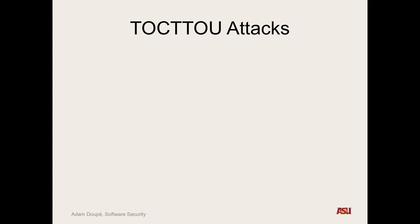Let me get to one of my favorite classes of attacks. TOCTOU — it actually stands for something nice: time of check to time of use. It sounds like a clock: tick-tock. The idea is that your application checks something and then uses it, and there's a gap in between. The problem we just saw: the application wasn't checking that the file doesn't exist before creating it. So you want to solve this — how are you going to write the code to check it?